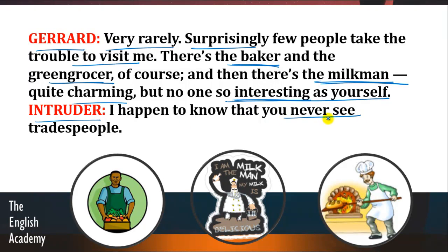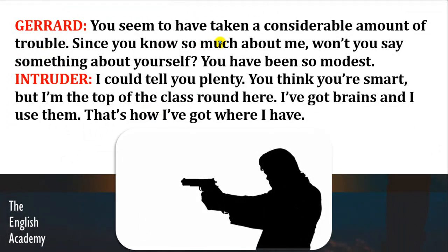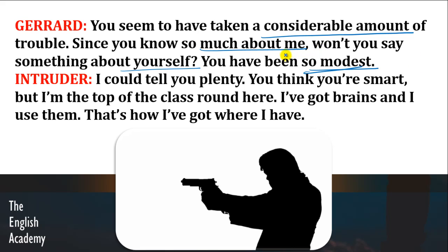Intruder says: 'I happen to know that you never see trades people.' Trades people are small traders — aise log jo chhote chhote trade karte hain jaise ke shopkeepers, sellers. Toh intruder kehta hai ke mujhe pata chala hai ke tum kabhi bhi trades people se nahi milte. Gerard says: 'You seem to have taken a considerable amount of trouble. Since you know so much about me, won't you say something about yourself? You have been so modest.' Modest means not to speak of one's own abilities — apne khud ki baat na karna, humble rehna. Gerard kehta hai ke tumne mere baare mein itni information kattha ki hai, lekin tumne abhi tak apne baare mein kuch nahi bataya — tum kitne modest ho.